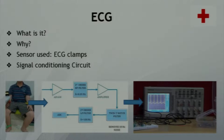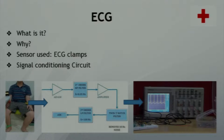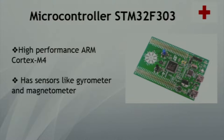ECG is the recording of the electrical activity of the heart. More than 600,000 people across the world die annually due to heart diseases. The sensor we used for ECG was ECG clamps. The signal from ECG clamps is very weak and gets mixed with noise, so we used a signal conditioning circuit to filter and amplify these signals. All these sensors were interfaced with the STM32F303 microcontroller, a high-performance microcontroller operating at 72 megahertz. Now Purva will talk more about the Android app.